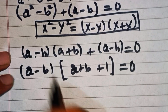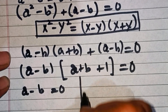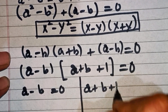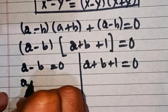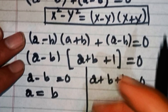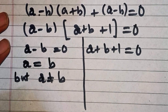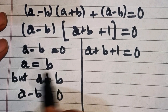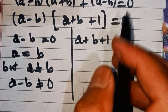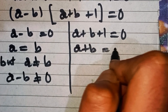Now we have two solutions. The first solution is a - b = 0, and the second one is a + b + 1 = 0. From the first, a = b, but we know from the question that a is not equal to b. So a - b ≠ 0, and this solution is rejected. We move to the next solution: a + b + 1 = 0, so a + b = -1.